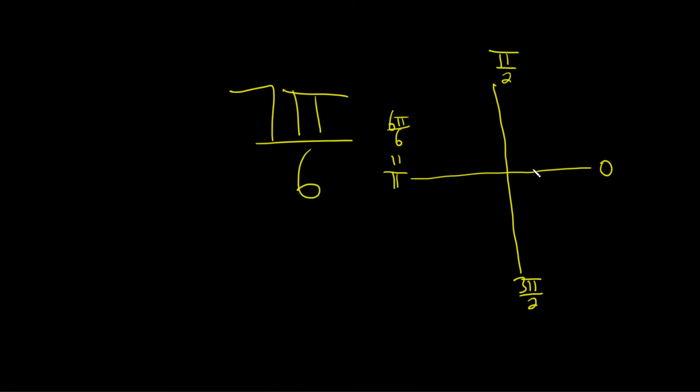So 7π over 6 should be somewhere over here. It's just π over 6 more. So this is 7π over 6.